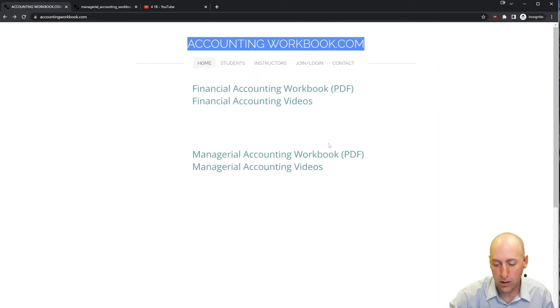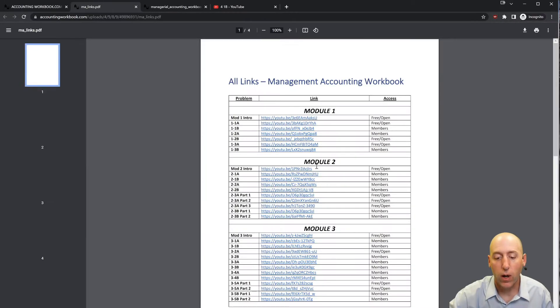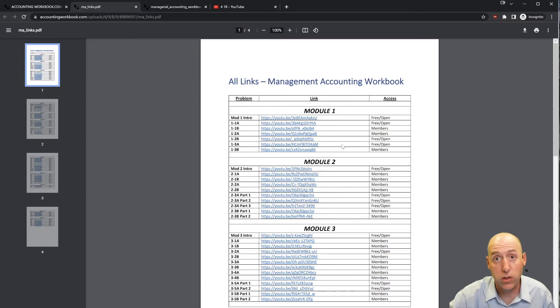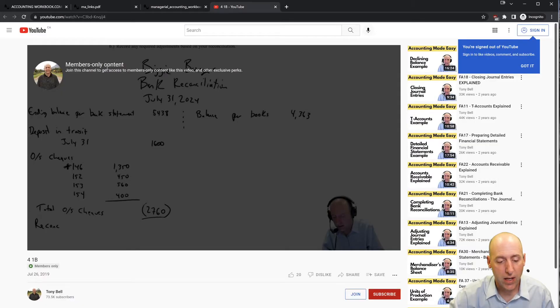Also found on the website are links to all of my accounting videos, not just the ones here on YouTube that are publicly listed, but also members-only videos. About 40% of my videos are free and open, the other 60% are for members. If you click one of the members links, it'll take you to a page that says members-only content. If you'd like access to that content, just hit the join button.